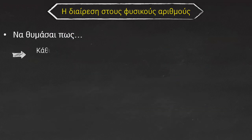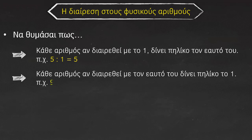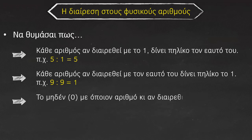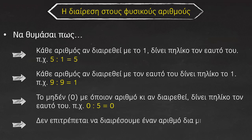Να θυμάσαι πως κάθε αριθμός, αν διαιρεθεί με το 1, δίνει πηλίκο τον εαυτό του. Παραδείγματος χάρη, 5 δια 1 κάνει 5. Κάθε αριθμός, αν διαιρεθεί με τον εαυτό του, δίνει πηλίκο 1. Παραδείγματος χάρη, 9 δια 9 κάνει 1. Το 0 με όποιον αριθμό και αν διαιρεθεί, δίνει πηλίκο τον εαυτό του. Παραδείγματος χάρη, 0 δια 5 ίσον 0. Και τέλος, δεν επιτρέπεται να διαιρέσουμε έναν αριθμό δια 0. 4 δια 0 είναι αδύνατο.